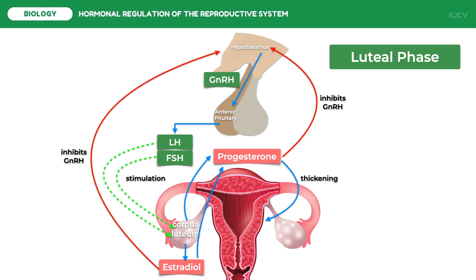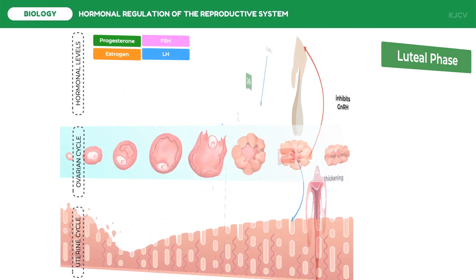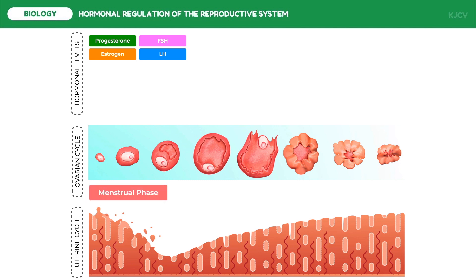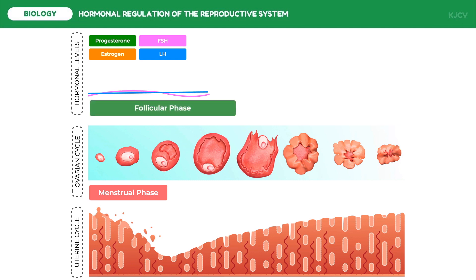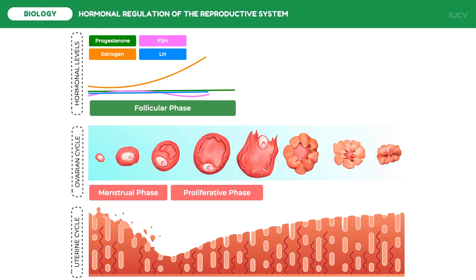Let us now look at the overall hormonal interactions during the menstrual cycle. The female reproductive cycle starts with the menstrual phase, in which the uterine lining sheds off as blood due to low reproductive hormone levels. Under the influence of FSH and LH, the follicular phase begins to develop a new ovum. The premature egg, called the ovarian follicle, secretes estrogen. Rising, moderate levels of estrogen inhibit FSH secretion, which declines during the latter part of the follicular phase and incompletely suppresses LH secretion. This rise in estrogen allows the endometrium to partially thicken — hence the name proliferative phase — preparing the uterine lining for the incoming ovum. Progesterone remains very low during this period.